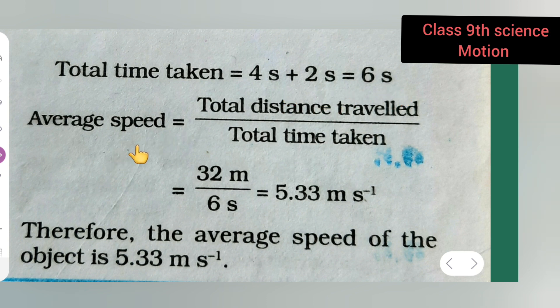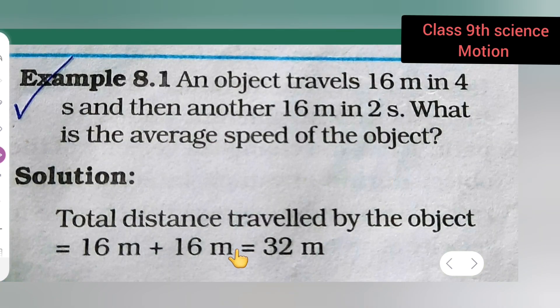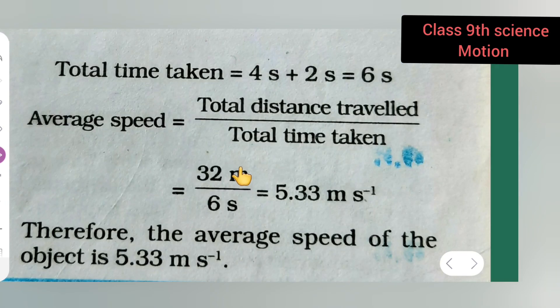What is the formula of average speed? Total distance traveled upon total time taken. The total distance traveled by the object is 32 meters. So plug that value: 32 meters upon total time taken, which is 6 seconds.